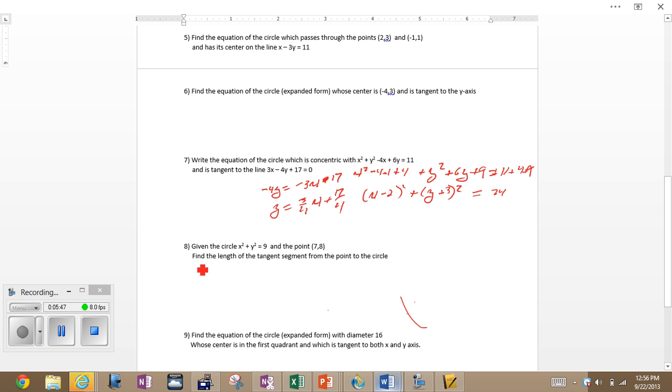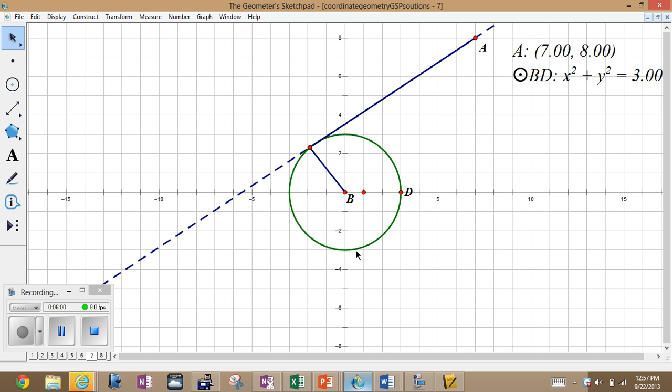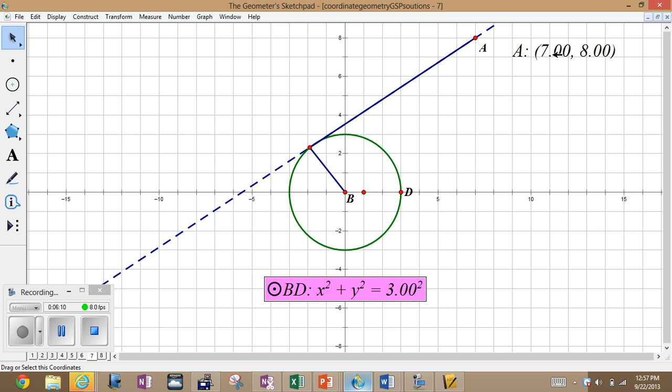Number eight is going to be quite interesting. So we're going to sketch that up. We've got a circle of radius three centered at the origin and a point at (7, 8). So I'm going to go take you to a sketch of that, which is right here. So here's my circle of radius three centered at the origin. Here's my point.